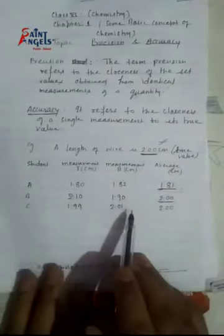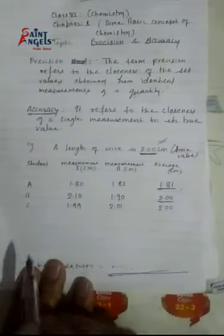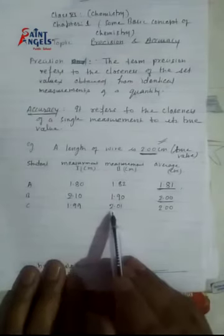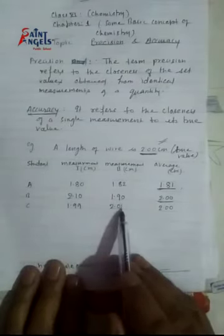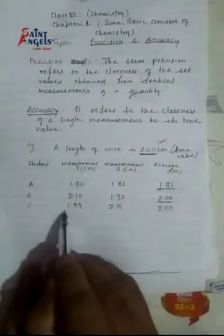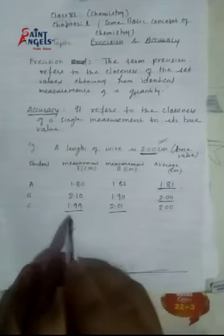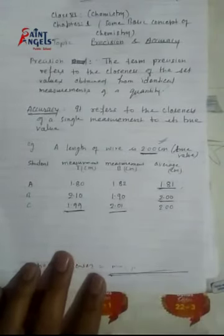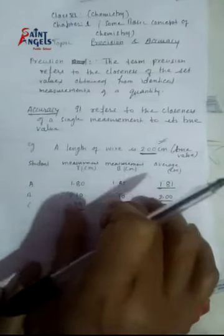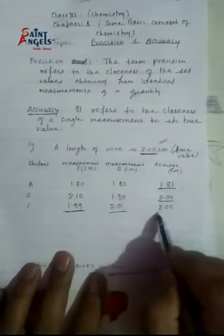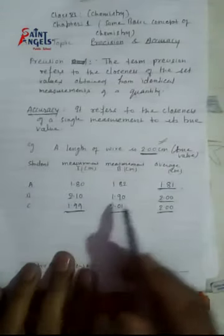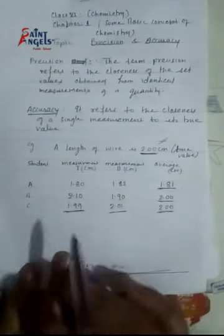अब अगर हम C में जाएं, तो C ने जो measurement किया है — first measurement value आया 1.99 and second measurement is 2.01। तो both values काफी close हैं एक-दूसरी के — 1.99 and 2.01 — यह काफी close values हैं। दोनों measurements close हैं, और दोनों का जो average है वो true value से match कर रहा है। That means C का जो measurement है वो precise भी है और accurate भी है।